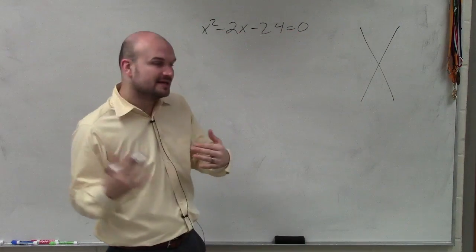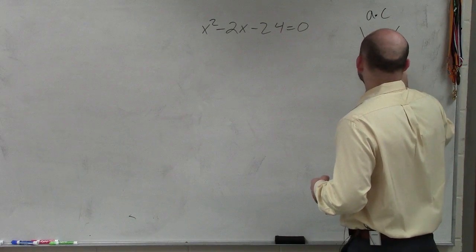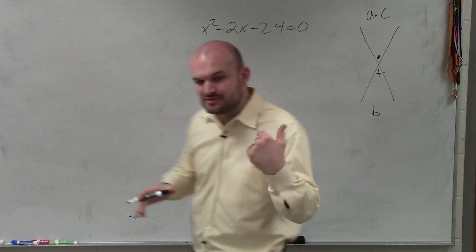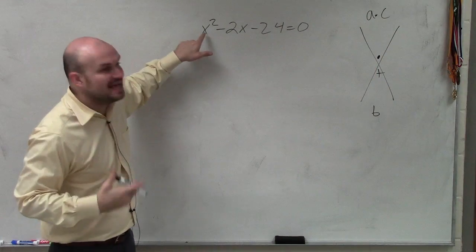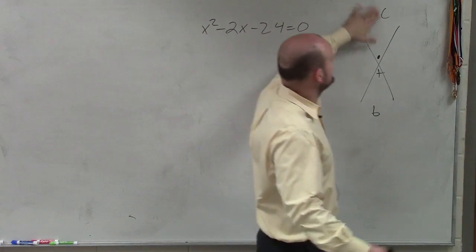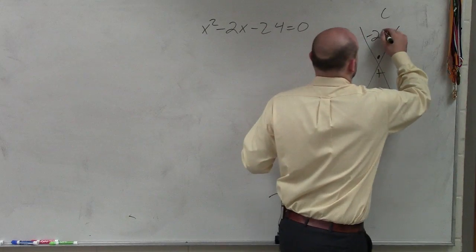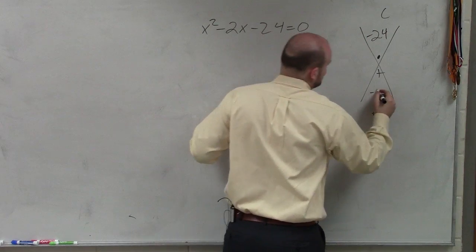And the diamond method, it was always a times c over b. And we want to see what two numbers multiply to give us a times c but add to give us b. But what's nice about this one is a is equal to 1, right? So we don't really need to multiply 1 times c. We just need to really figure out what c is. So we take the value of c, which is negative 24, and then we take the value of b, which is negative 2.